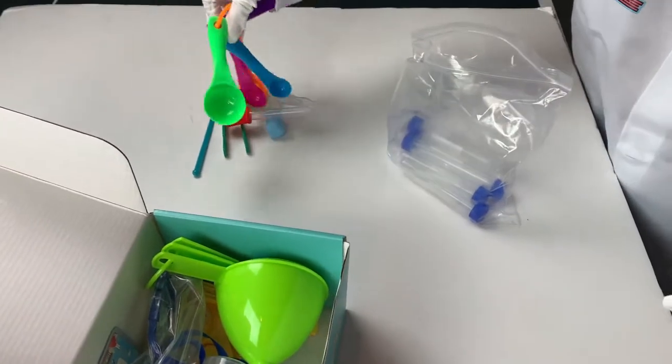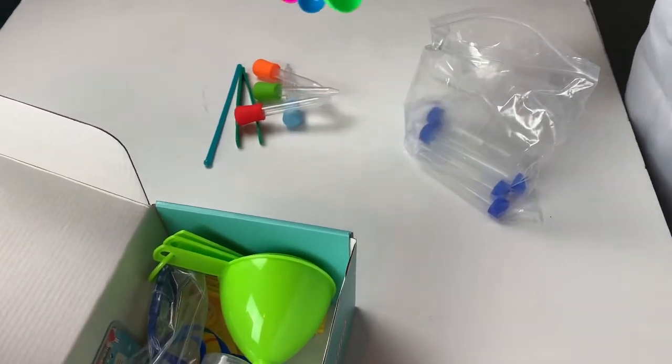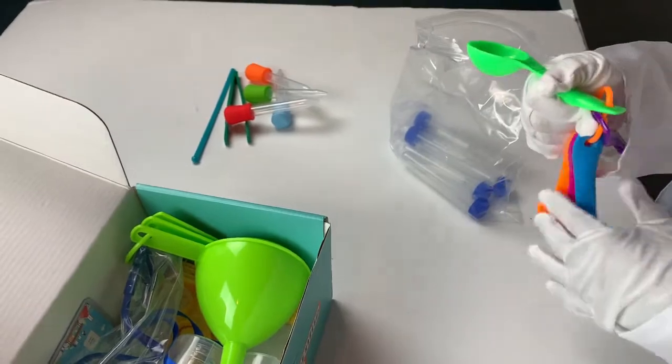Next we've got some teaspoons. So we've got a blue one, a purple one, a blue one, and a pink one. So those are the measuring spoons.